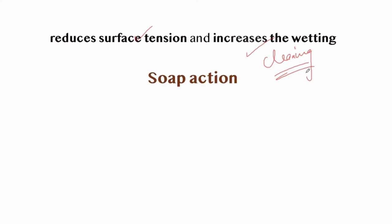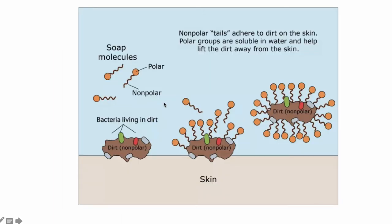This property is utilized in soap action — the action of fatty acids contained in soap. For example, skin has dirt and bacteria on it. With the help of soap, which has a non-polar end and a polar end, the non-polar end sticks to the dirt while the polar end is hydrophilic, so with the help of water it removes the dirt from the skin.